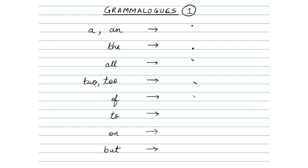Next, we have 'on'. This is represented by a tiny light stroke like this. Next, we have 'but'. 'But' is again represented by making the tiny light stroke, but this time on the line, like this.